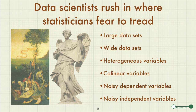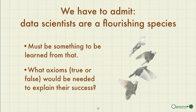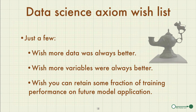We could say data scientists rush in where statisticians fear to tread. In addition to using test-train split as their preferred validation method, they work with large, wide data sets, very many variables without any justification, heterogeneous variables, collinear variables, noisy dependent variables, and noisy independent variables. But data scientists are a flourishing species with a lot of success, so there must be some set of axioms that explain how their common steps are justified. Let's call this the data science axiom wishlist: you wish more data was always better, you wish more variables were always better, and you wish that good performance on training data could be retained on future model application.